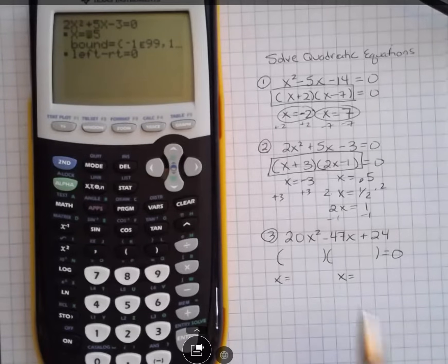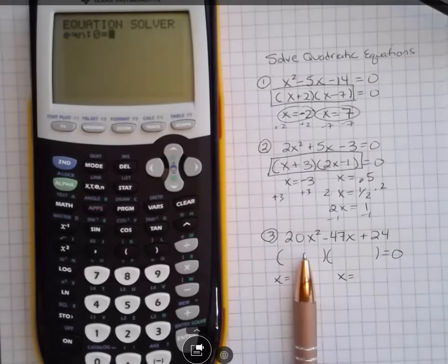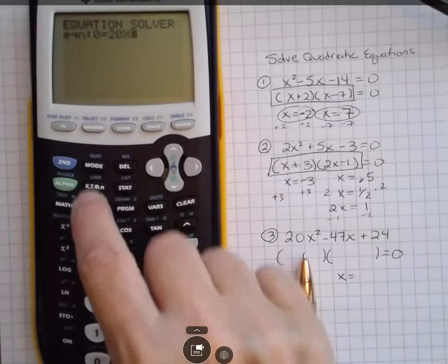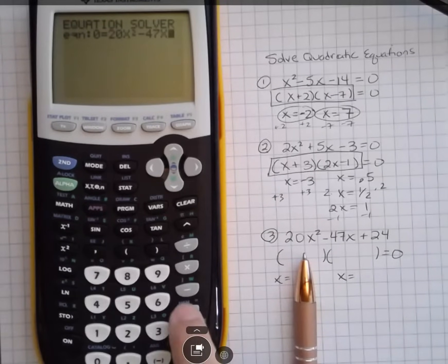Okay, moving on to the third one. By now you can see that this method requires you to already have some algebra knowledge to really use the calculator effectively, but it is something you can use. So we're going to put this one in: 20x squared minus 47x plus 24.